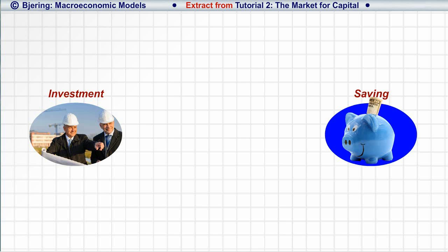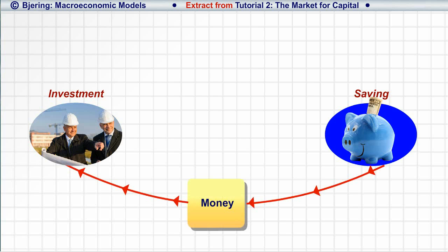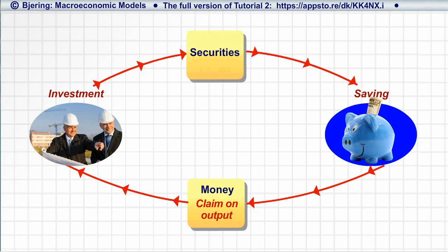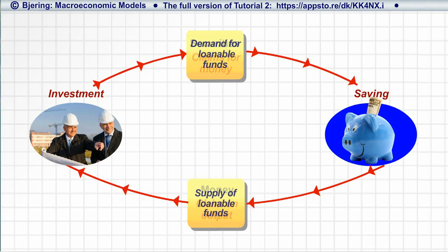Thus, in practice, savers transfer money — that is, immediately redeemable claims on output — to investors, against securities, that is, against claims for repayment of loans. Thus, the transfer of resources from savers to investors is realized by loan transactions, as savers supply and investors demand loanable funds.